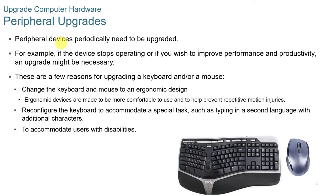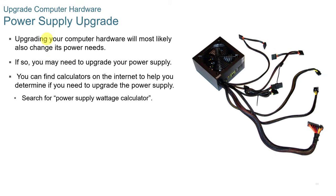Peripherals sometimes need upgrading — you might swap a keyboard for a more ergonomic design, add lighting, or upgrade a mouse. Keyboards can be reconfigured for special tasks like typing in a second language or to accommodate users with disabilities. When upgrading a power supply, it's most likely because you've upgraded a CPU or added more components needing more power. Use a power supply wattage calculator to ensure the new power supply provides sufficient power.